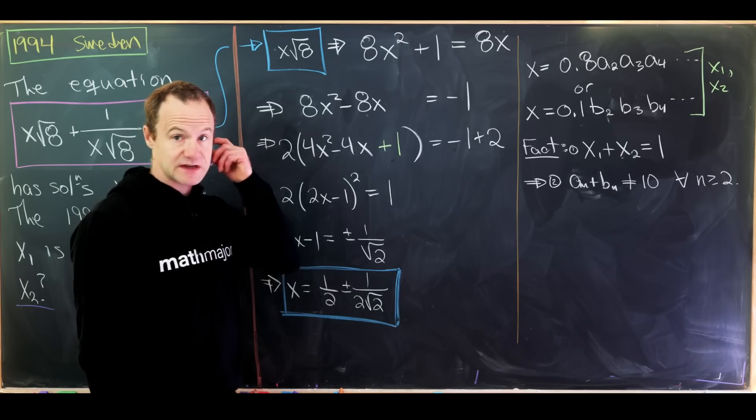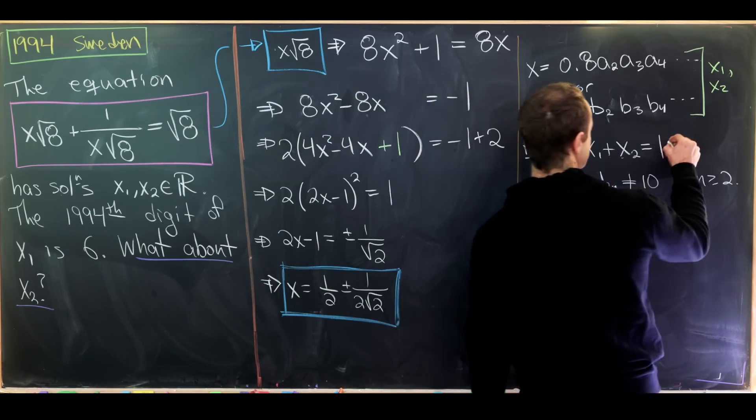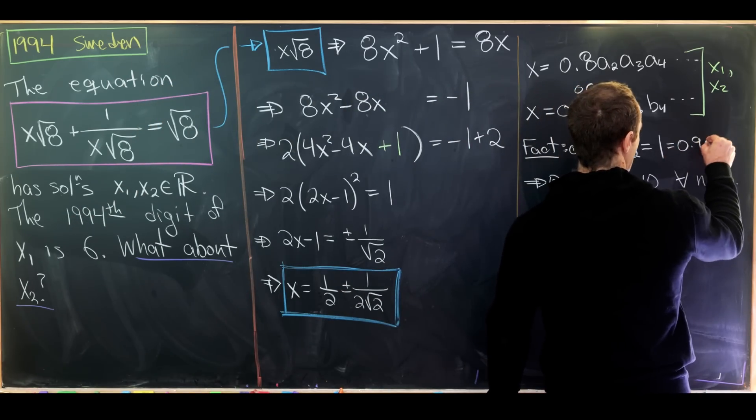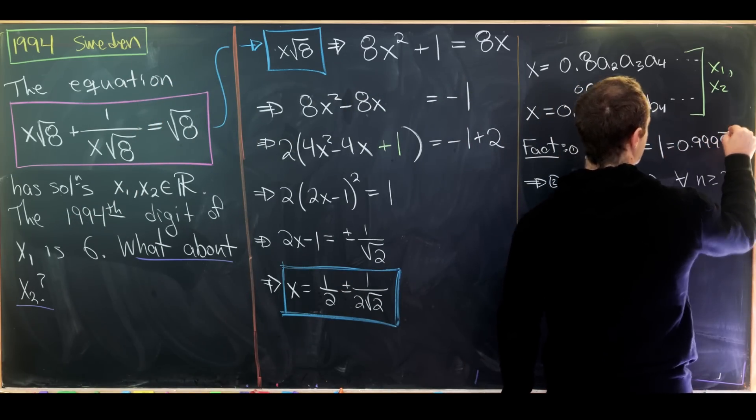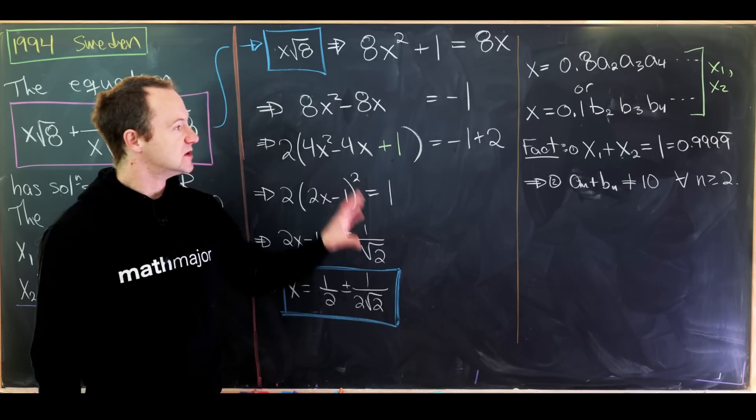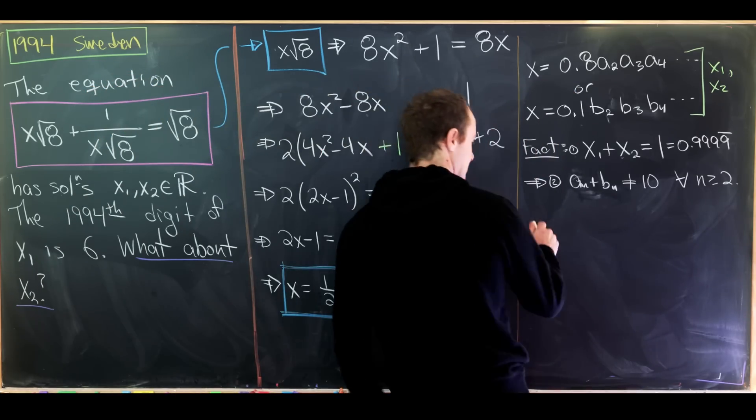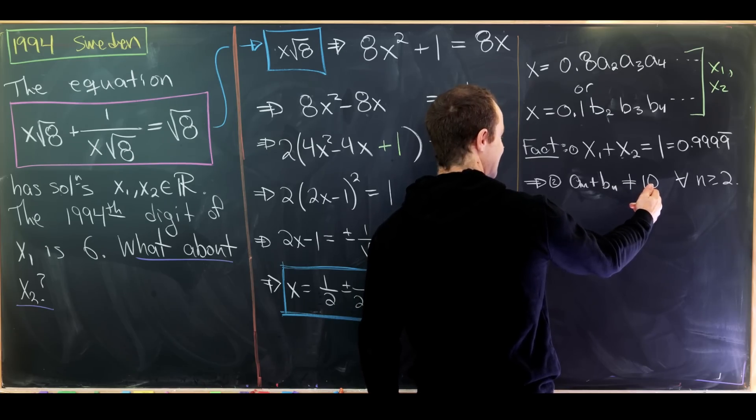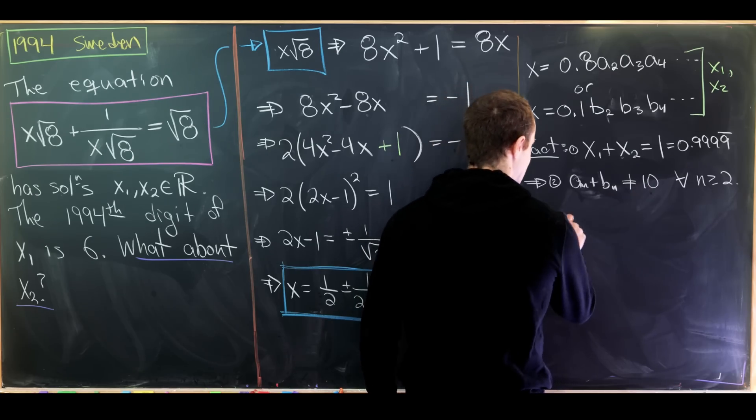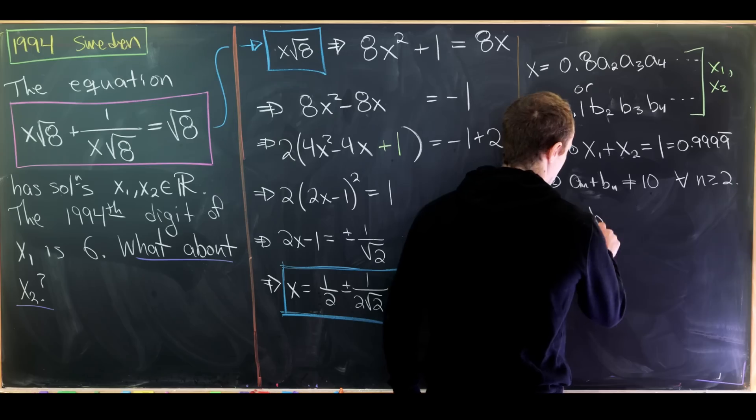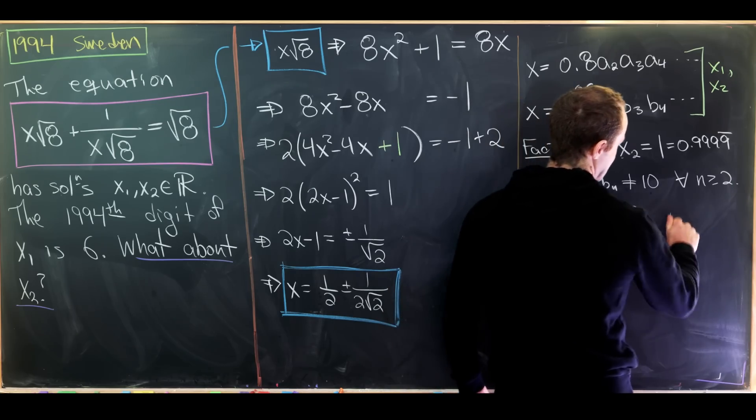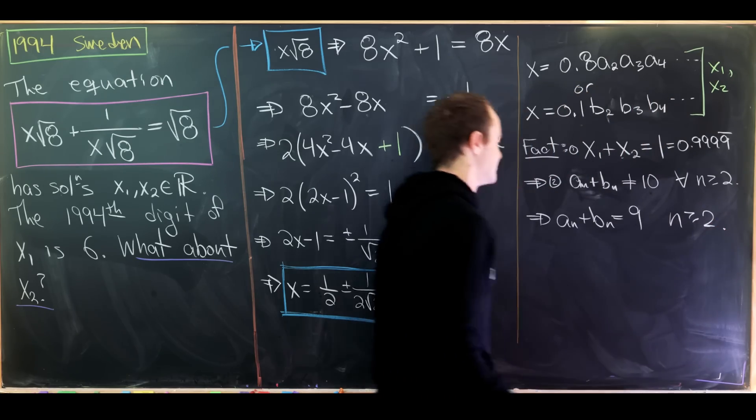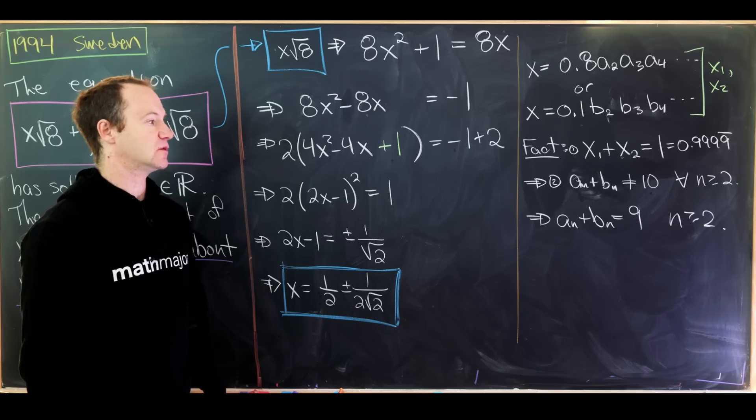But now that seems to cause a problem because this one ends with a bunch of zeros. But the important thing to do here is to express this one as 0.9999 repeating and so on and so forth. So now putting these two things together, what we see is that in fact, since these are not equal to 10, they must be equal to 9 for all natural numbers n bigger than or equal to 2. So we have a n plus b n equals 9.